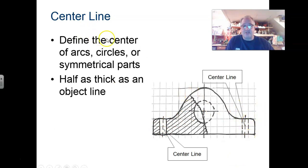Here's your center lines. They, of course, are used to define center of arcs, any circles, symmetry on a part. They're about half as thick as the object lines. They follow with a short dash, a space, long dash, short dash. Remember that short dash, space, long dash, space, short dash as you go through.